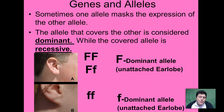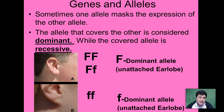When we look at alleles and how they work together, sometimes one allele will actually mask the expression of the other. The allele that covers the other is called the dominant allele, while the covered allele — the one that gets masked — is called the recessive allele.